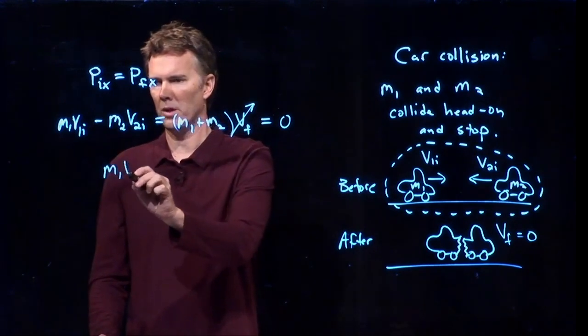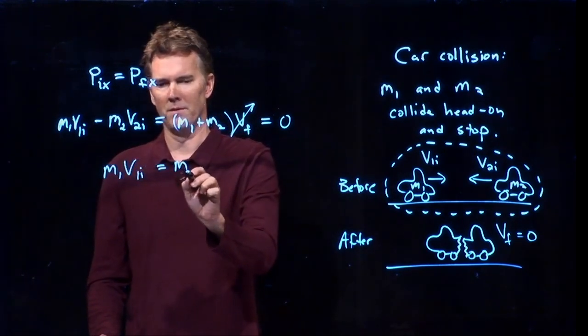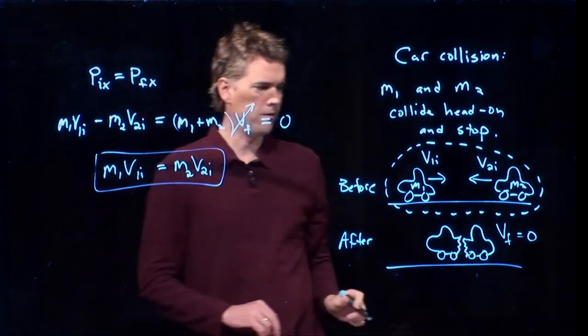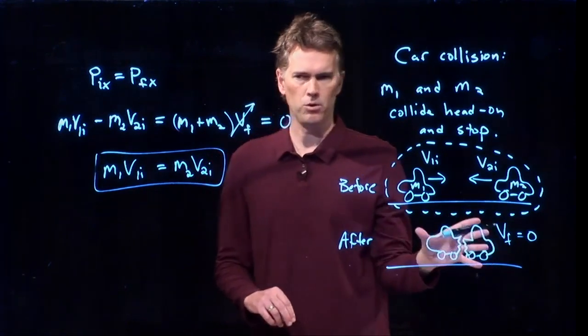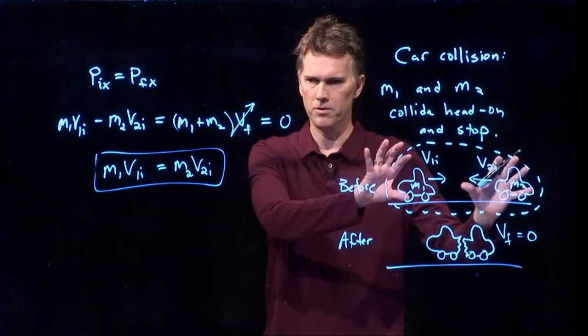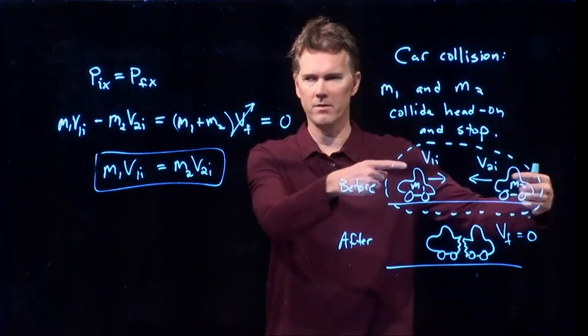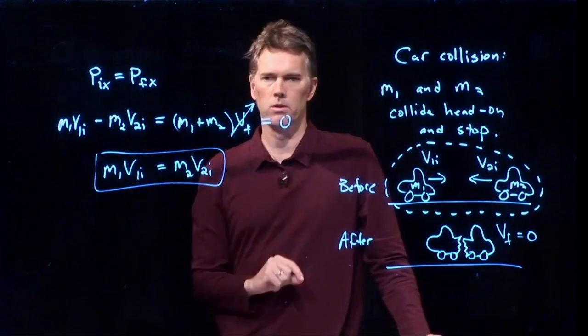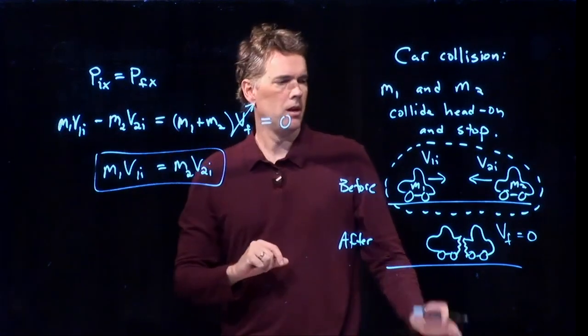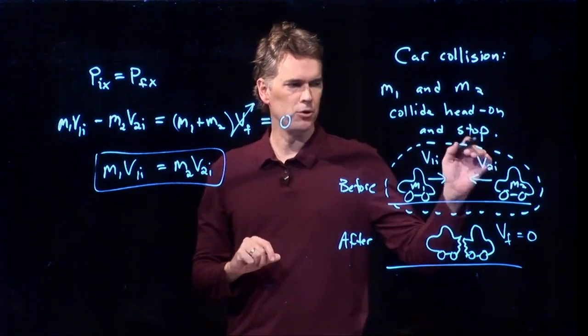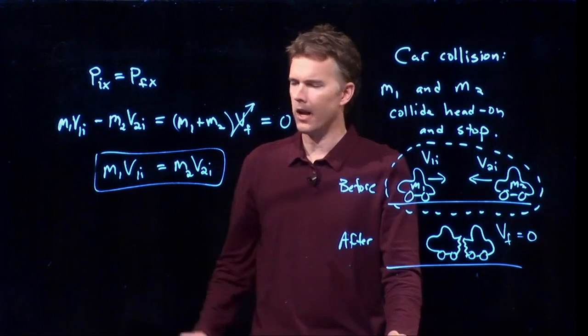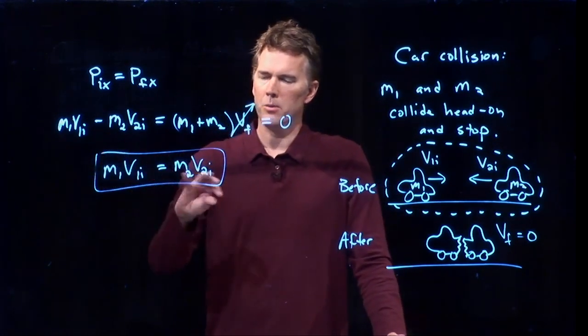And so now look what happens. You have a very nice simple relationship between the two. If the final momentum of the whole system is going to be 0, that means the initial momentum of the whole system has to be 0, and therefore the momenta of each car has to be equal and opposite. They have to be the same magnitude, m1·v1 initial, m2·v2 initial, and they have to be pointing in different directions.